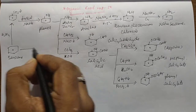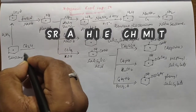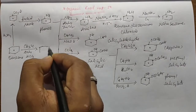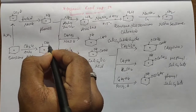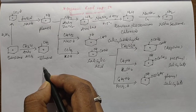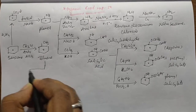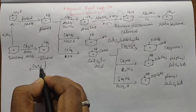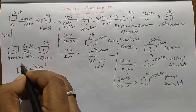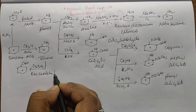When Benzene reacts with Methyl Chloride in presence of Anhydrous AlCl3, it can form Toluene. When Toluene reacts with Chromyl Chloride, it can form Benzaldehyde. This is called Etard's Reaction.